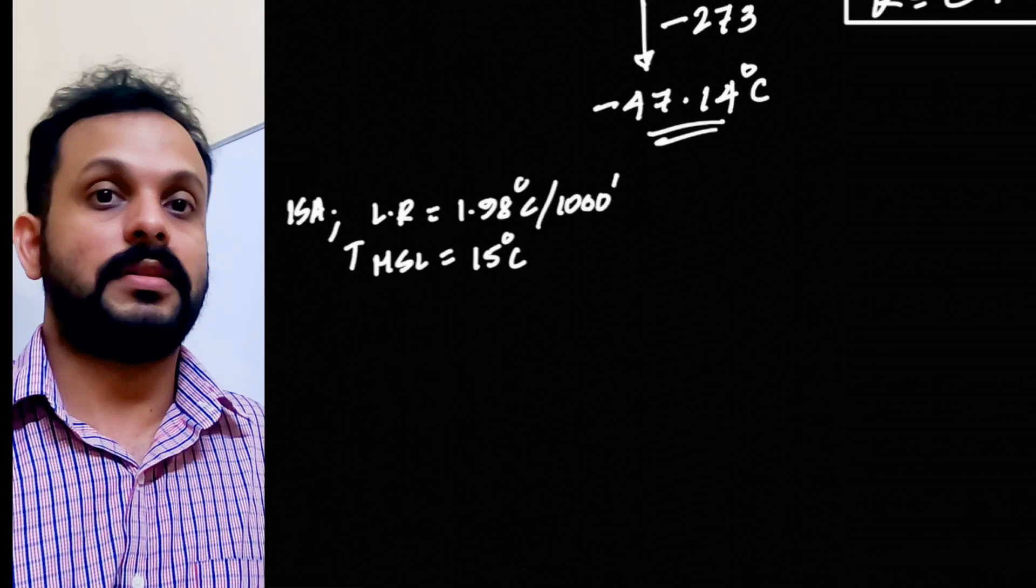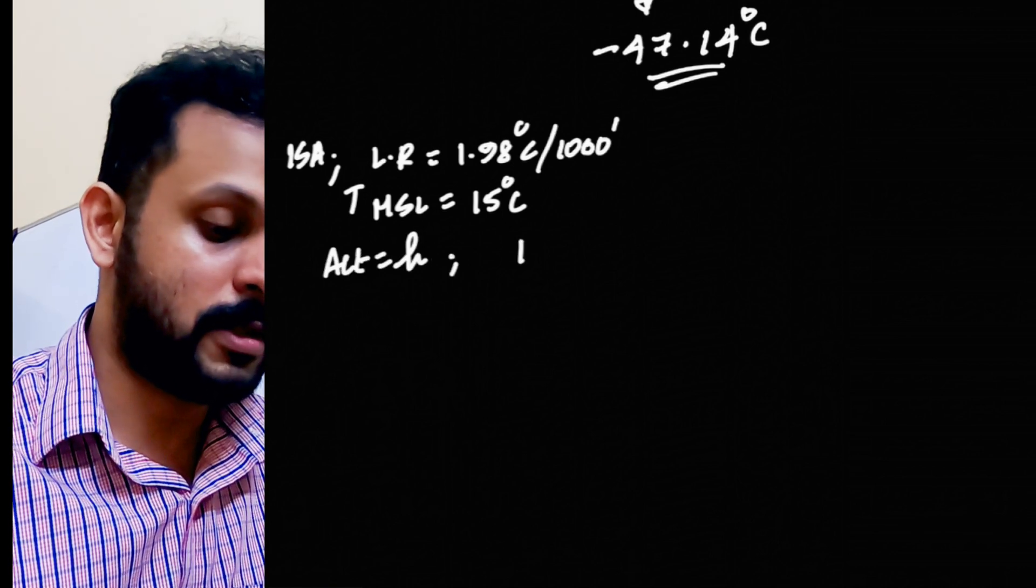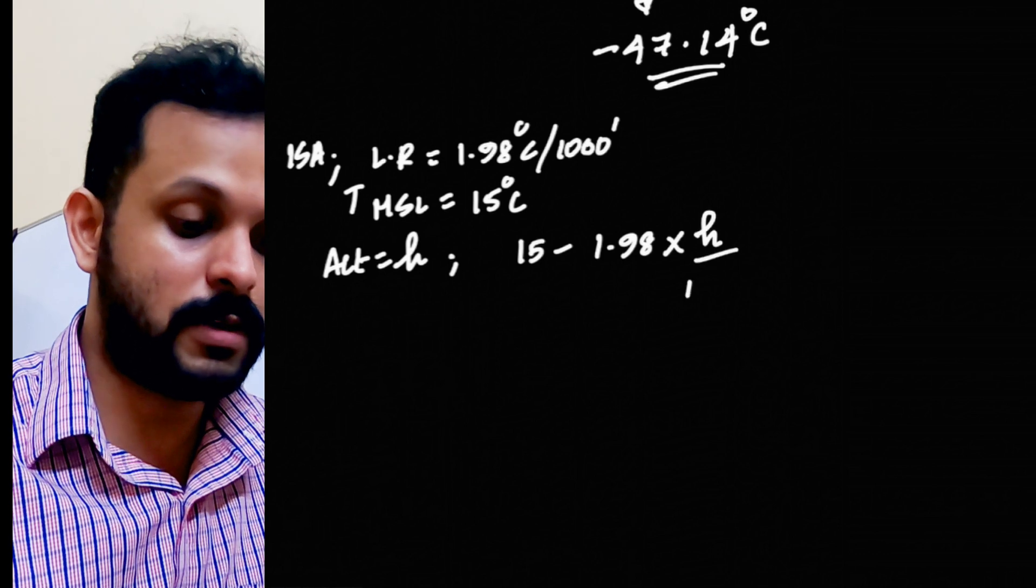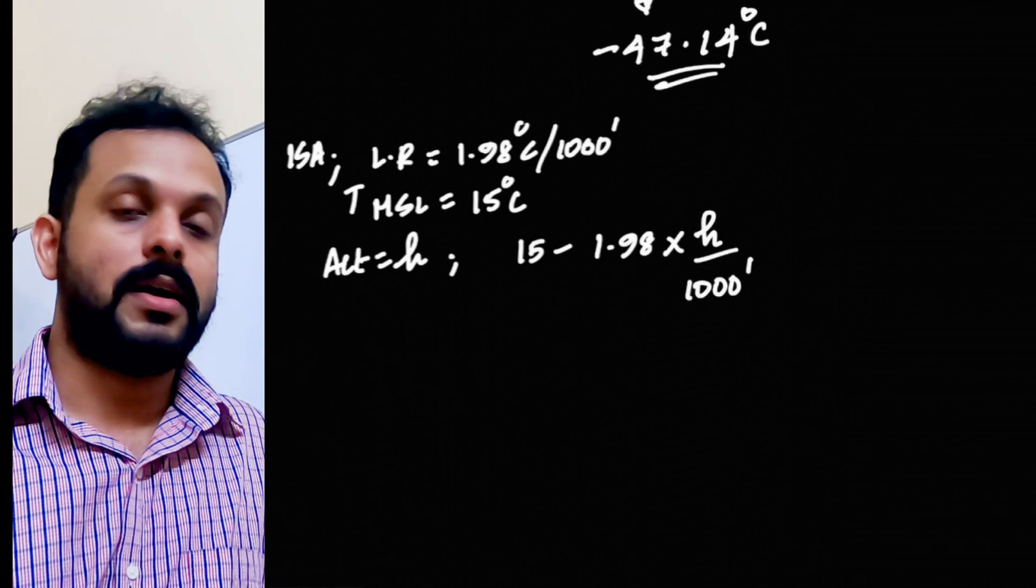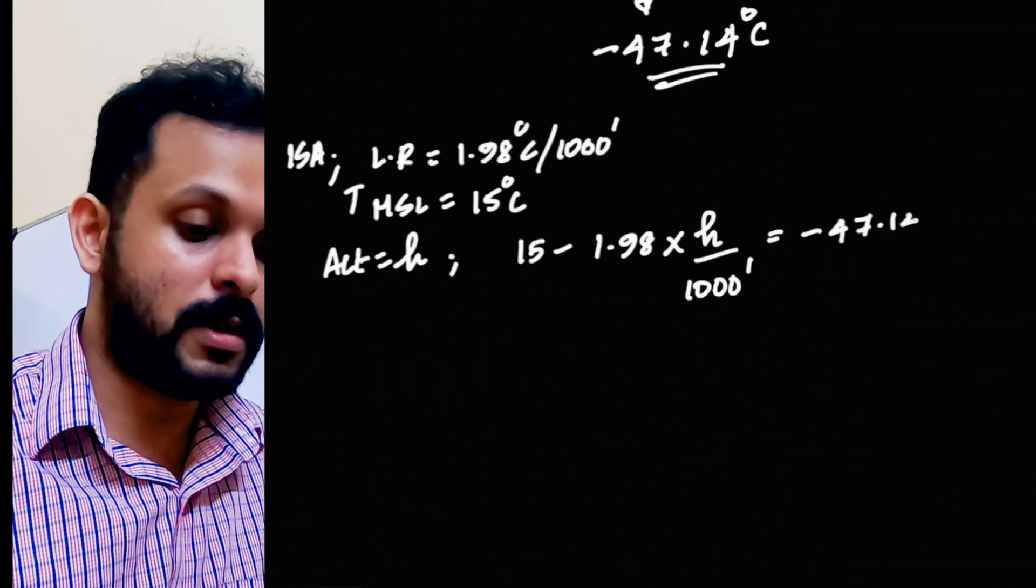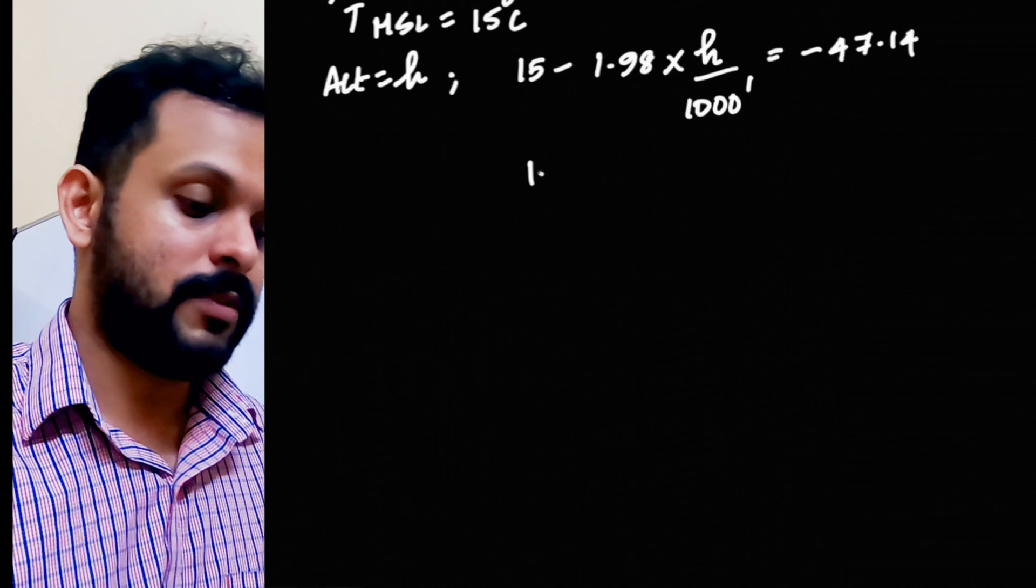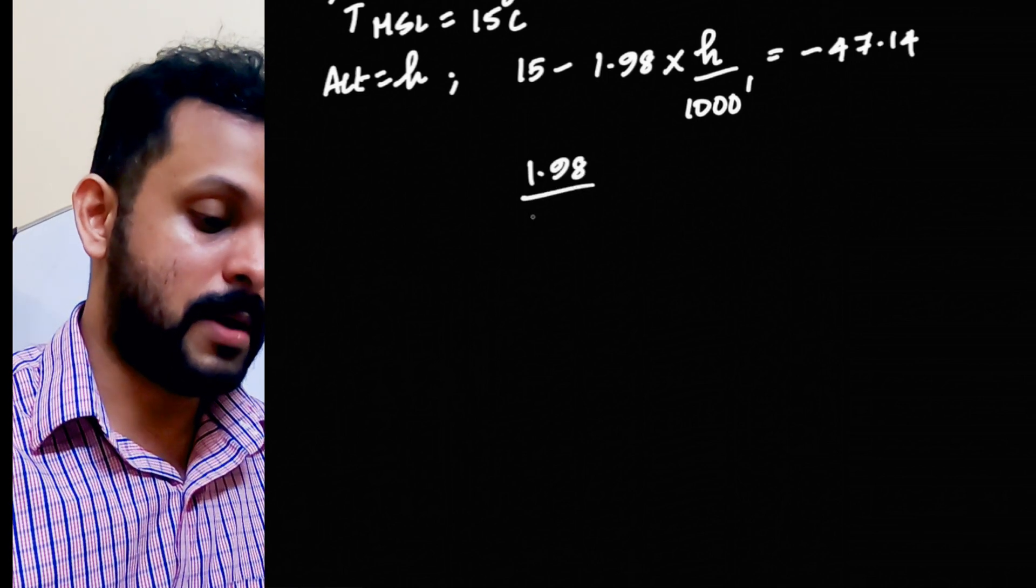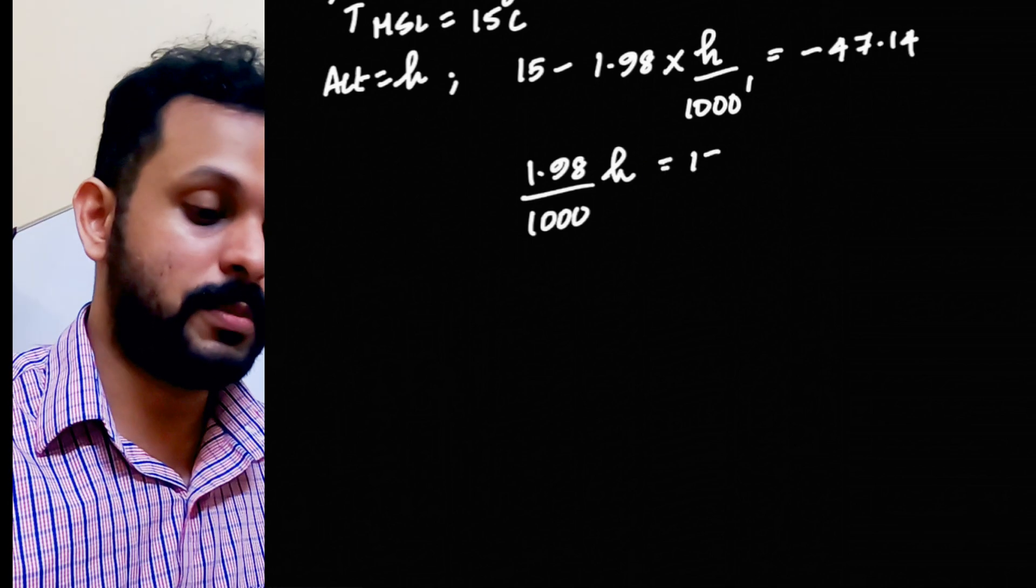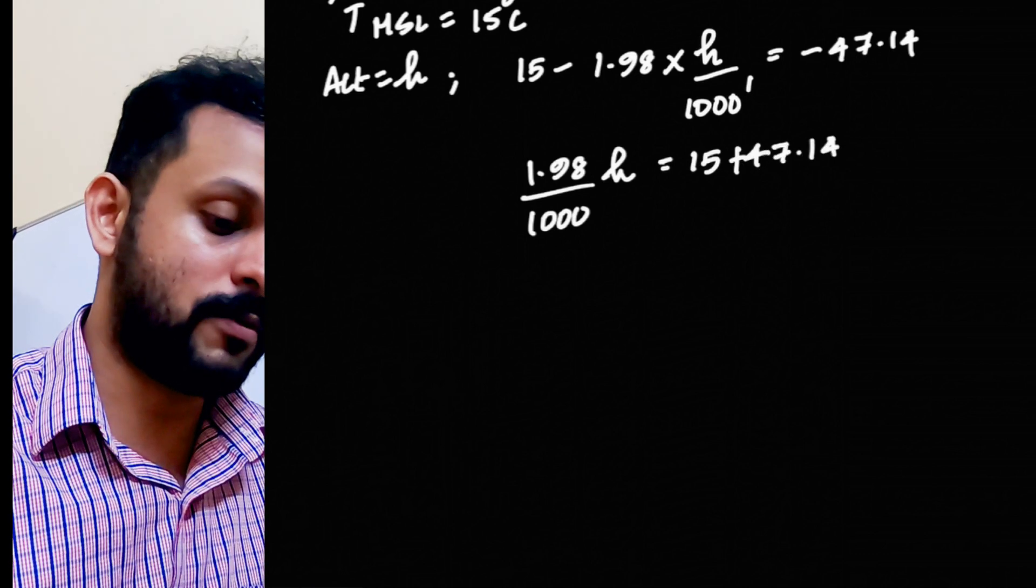At what height will the temperature amount to minus 47.14? That altitude is the answer. Let's find out. So, 15, let's take the altitude we are looking at as H. Therefore, 15 minus 1.98 degrees Celsius for every 1000 feet which means this is H divided by 1000 feet. Remember, a bit of methodology is required here and that is equal to minus 47.14 which is the final temperature. Now, I would like to solve this step by step because it's a linear equation. Therefore, 1.98 by 1000 into H. I've taken that to the right-hand side and it becomes 15 and minus 47.14 comes to the left-hand side. So it's 47.14.